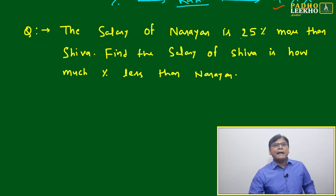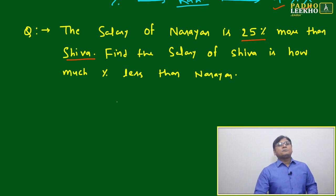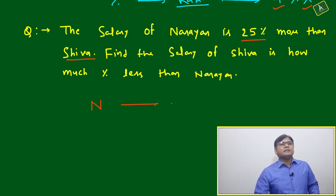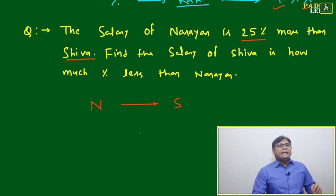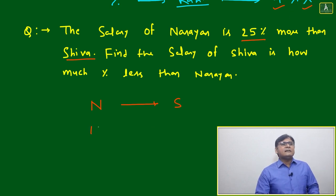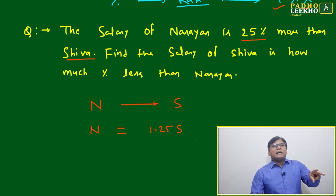The question says Narayan's salary is 25% more than Shiva's. Find how much percentage less Shiva's salary is than Narayan's. There are two persons: Narayan and Shiva. Since Narayan's salary is 25% more than Shiva, we can write: Narayan = 1.25 × Shiva.